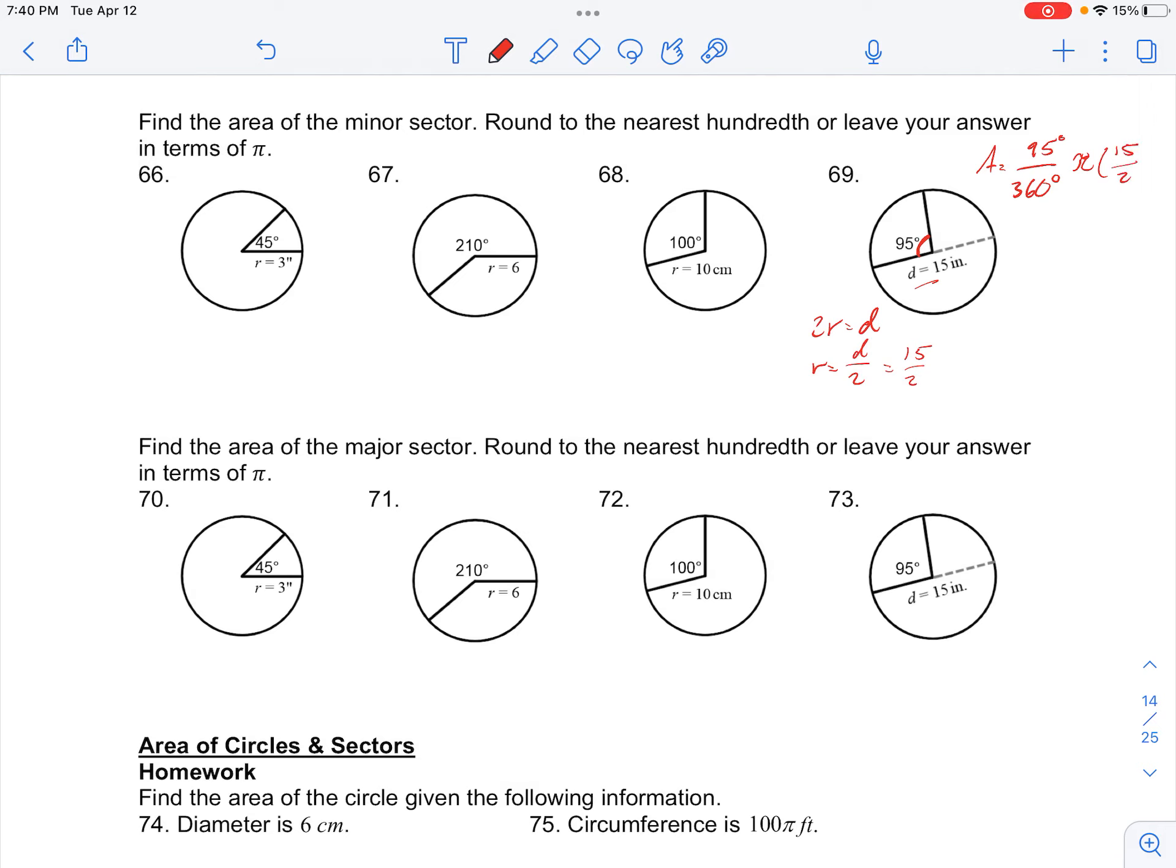We can plug this in for our radius in our formula here, so we have 95 times 15 squared, which is 225, times π over 360 times 4. And simplifying this a little further, we can divide by 15 in the numerator and denominator, so we would get 95 times 15 over 24 times 4π.